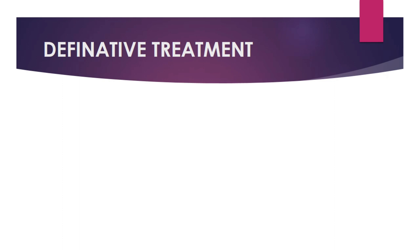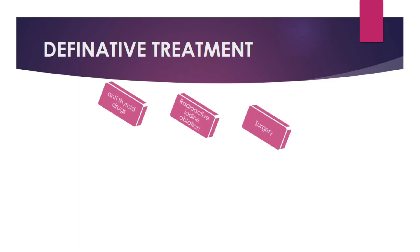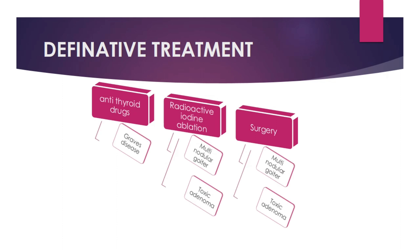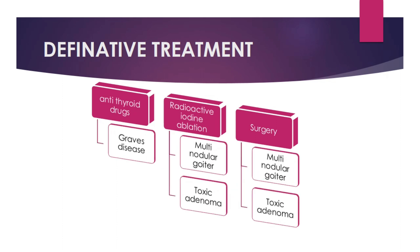The definitive therapy includes antithyroid drugs, radioactive iodine ablation therapy, and thyroid surgery. If the patient has Graves' disease, then we use antithyroid drugs. If the patient has a multinodular goiter or toxic adenoma, we use radioactive iodine ablation and thyroid surgery.